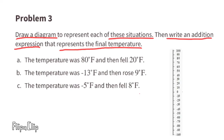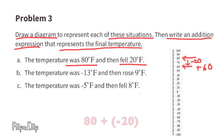Part a: the temperature was 80 degrees Fahrenheit and then fell 20 degrees Fahrenheit. That's 80 minus 20; however, they're asking us to write an addition expression, so we write 80 plus negative 20. You have 80 and you take away 20.